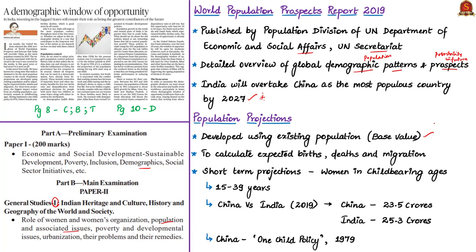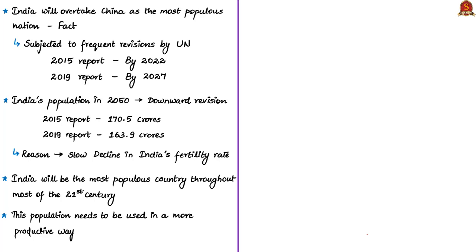For short-term projections, the biggest impact comes from the existing population of women in childbearing ages. The author compared the population of women in the age group 15 to 39 years between India and China. For 2019, China is estimated to have 235 million (23.5 crores) of this section, whereas India is estimated to be 253 million (25.3 crores). China's one-child policy, introduced in 1979, aimed to reduce the fertility rate and has worked. So India's population is likely to grow faster than China, and soon India will overtake China.